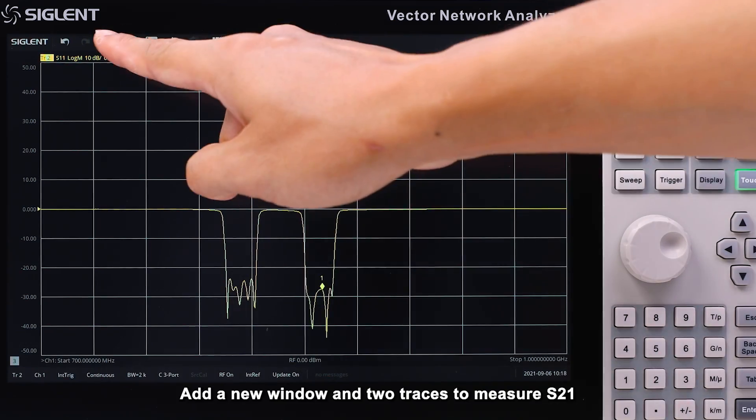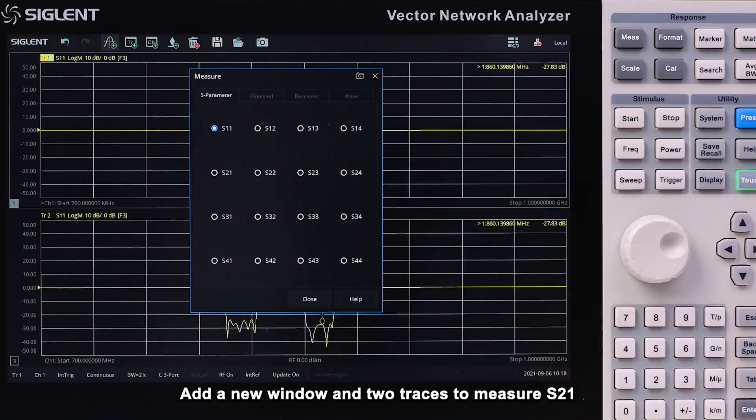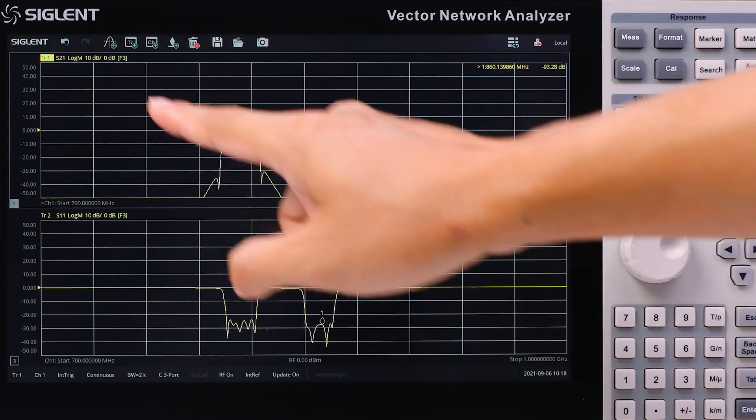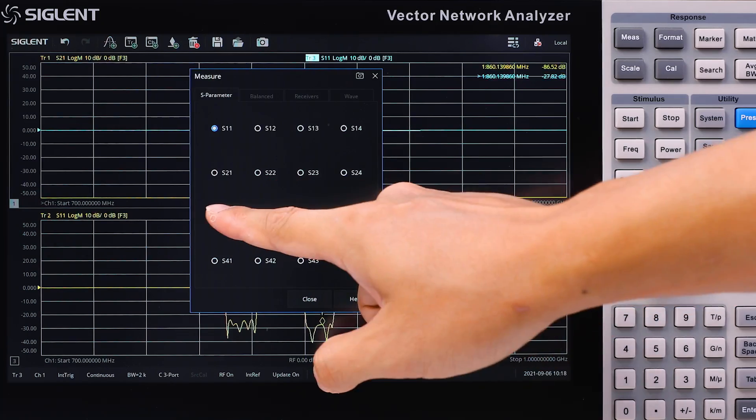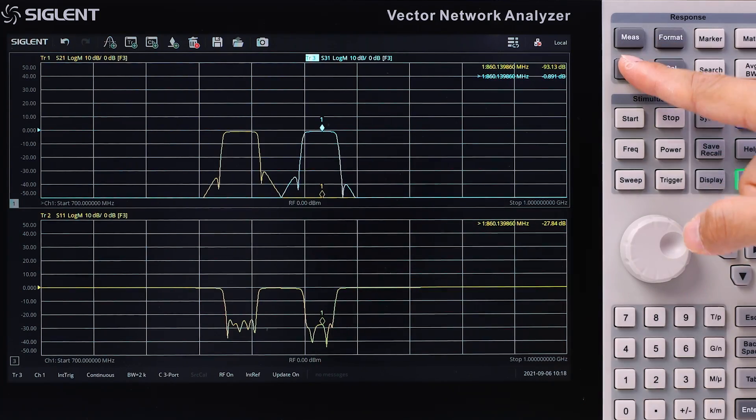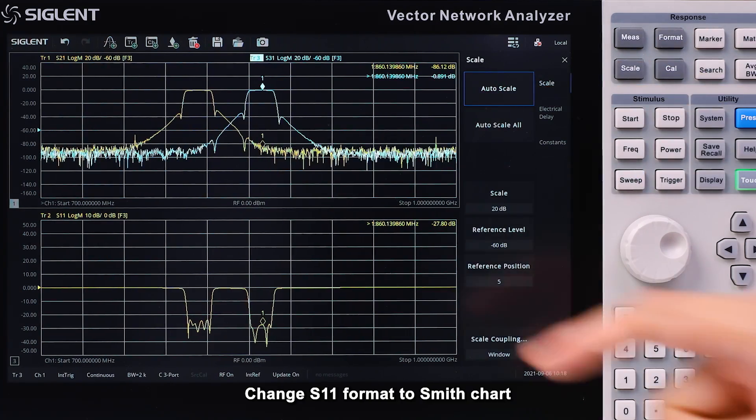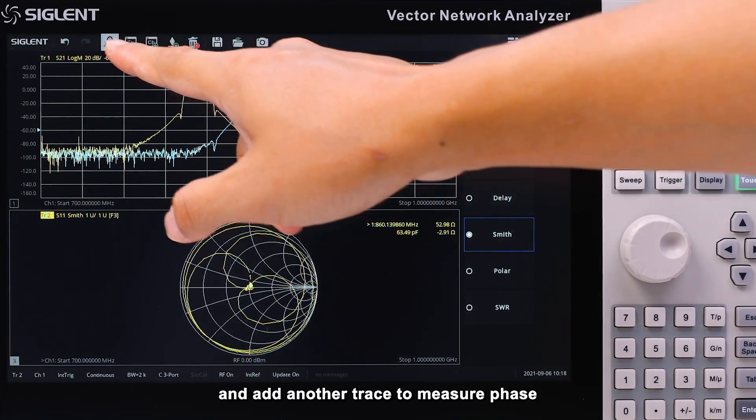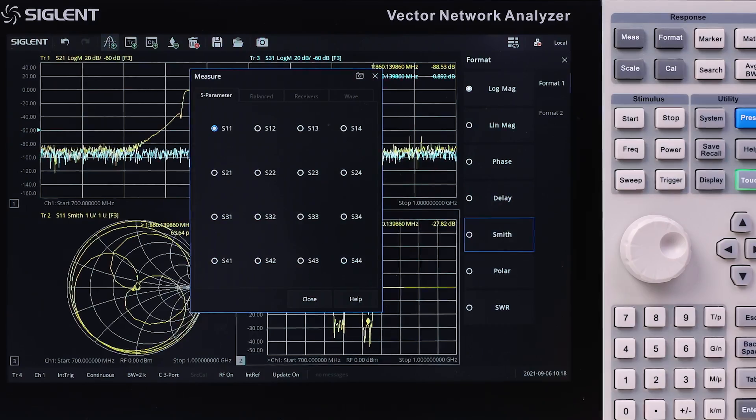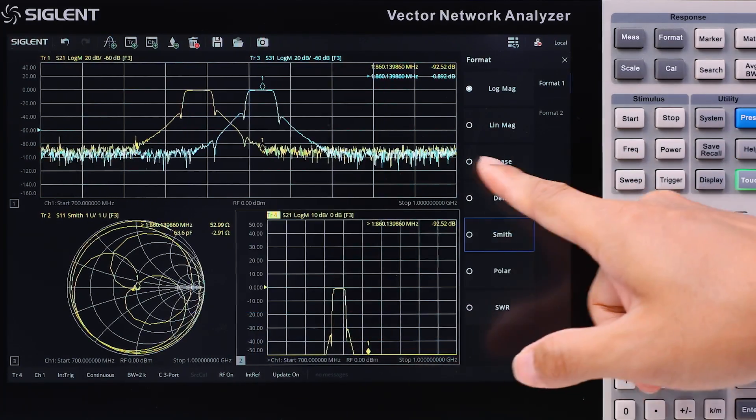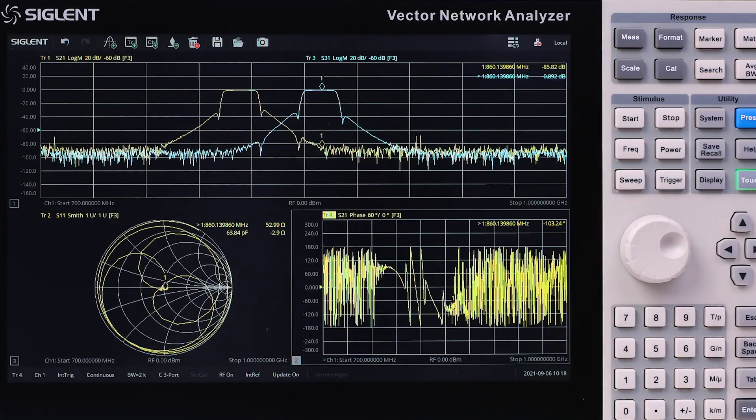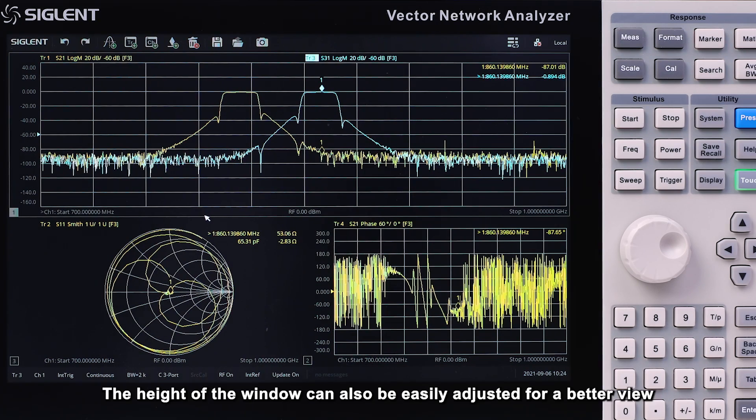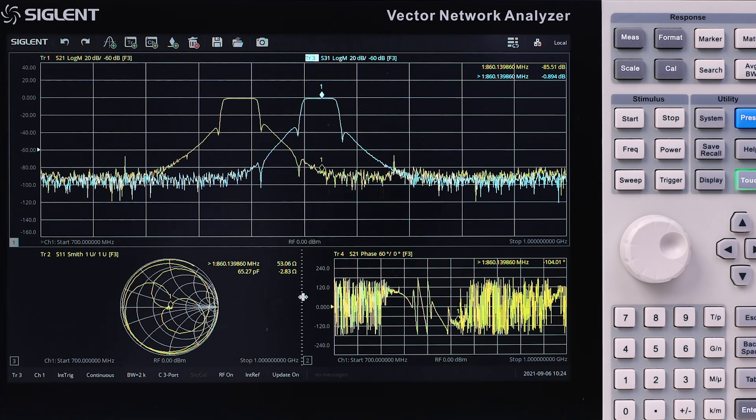Add a new window and two traces to measure S21 and S31. Change the S11 format to Smith chart, and add another trace to measure phase. The height of the window can also be easily adjusted for better viewing.